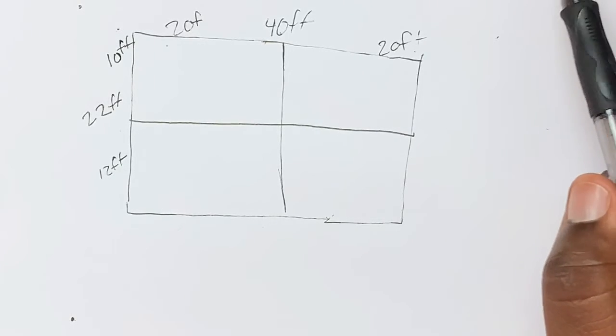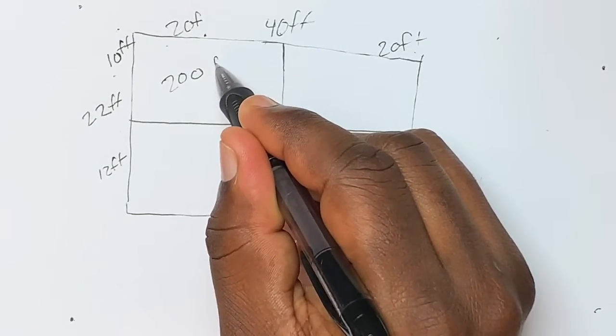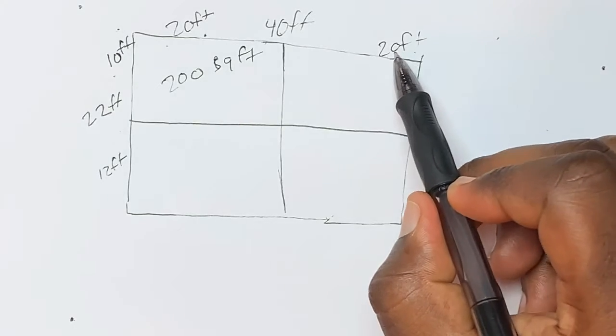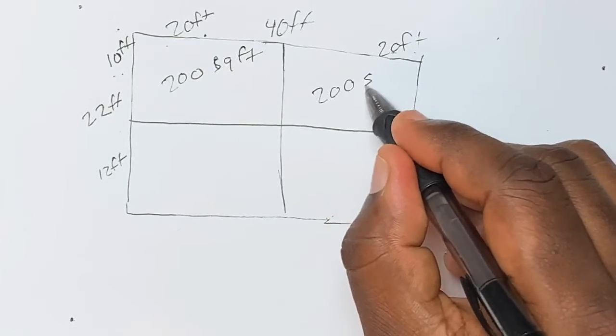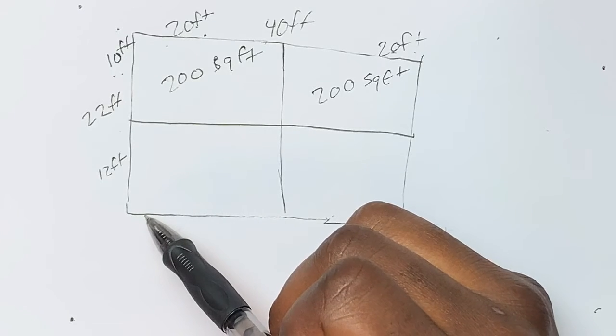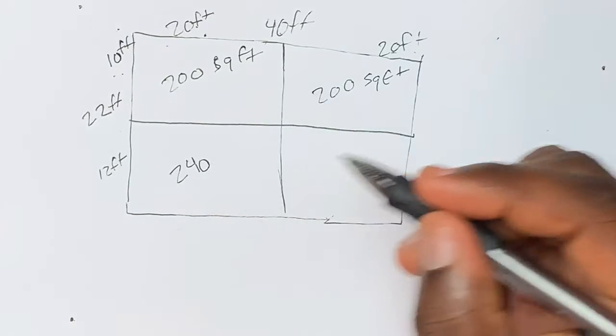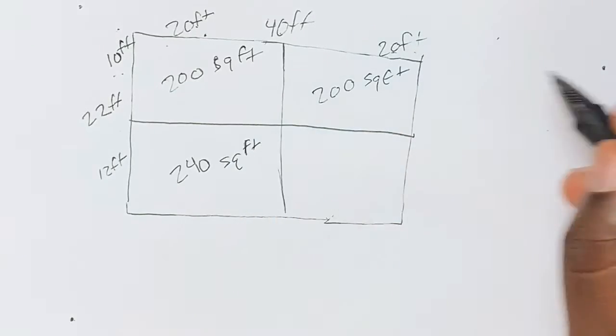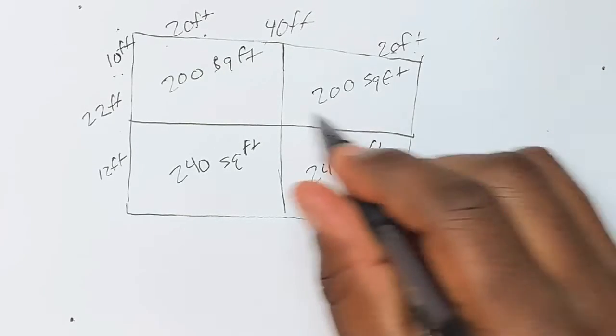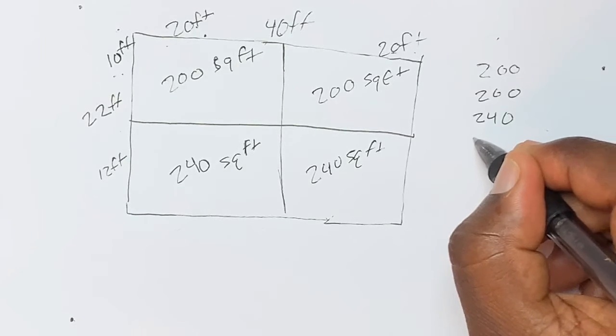Now, all I do is multiply each box. I have 20 feet and 10 feet, which gives me 200 square feet. I have 20 feet and 10 feet again, which gives me 200 square feet. Here, I have 20 times 12. What is 20 times 12? 240 square feet. And the same here. 240 square feet. Now, I take all of these and add them together. 200 plus 200 plus 240 plus 240.